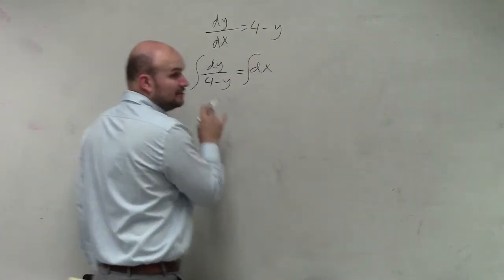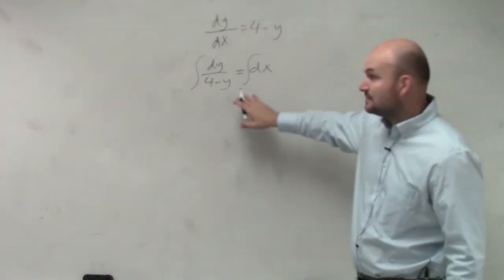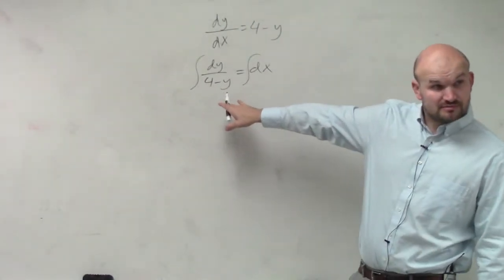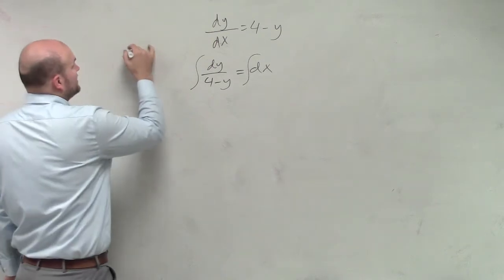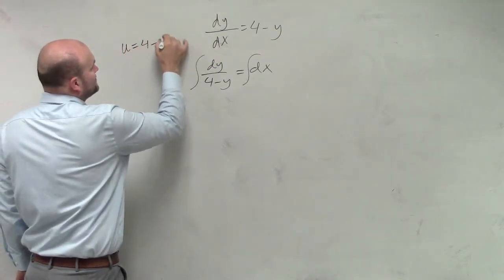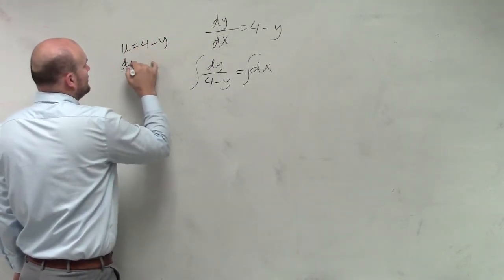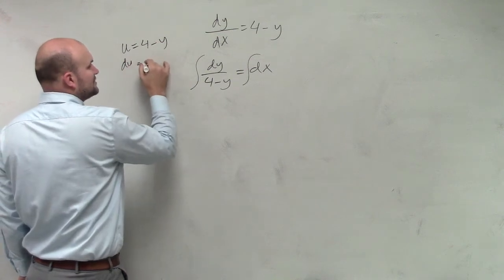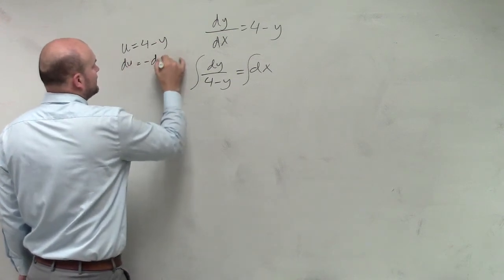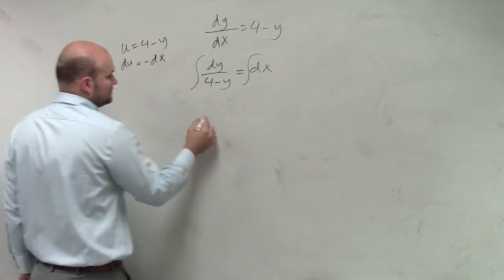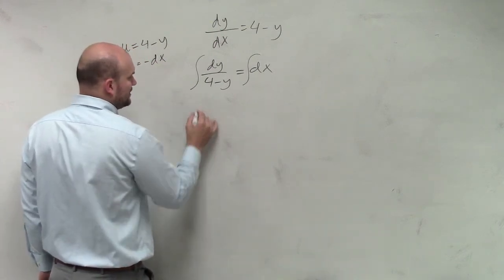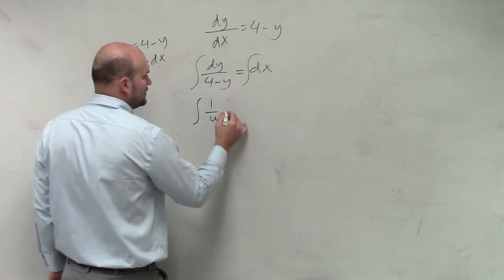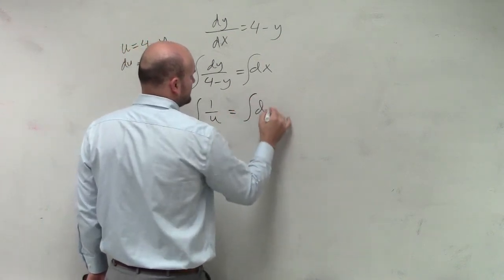Integrate both sides. You guys notice here we have a small little u substitution, right? You can say here that u is equal to 4 minus y, du is equal to negative dx. So we're basically going to be integrating 1 over u.